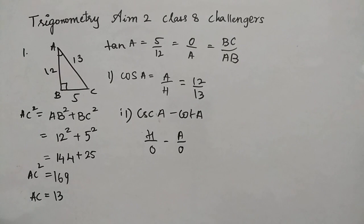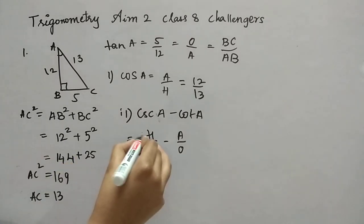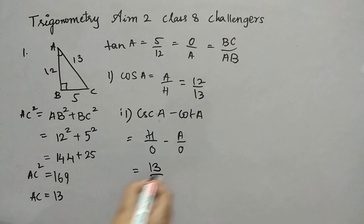Cosecant A is nothing but, it is H by O and minus A by O. So H is hypotenuse, A is adjacent, O is opposite. So shortcuts, right? We have to use sometimes. Now, H is 13, hypotenuse. Opposite side is 5 minus adjacent side is 12 and opposite is 5. Right now, we have to solve this. It will be 13 minus 12 is 1, right? So 1 by 5 is the answer. So with this, we completed first part.